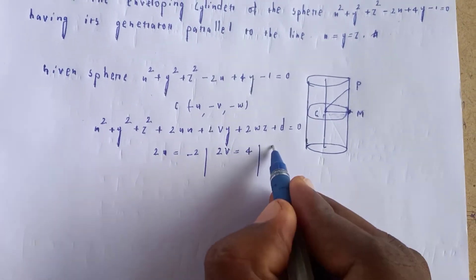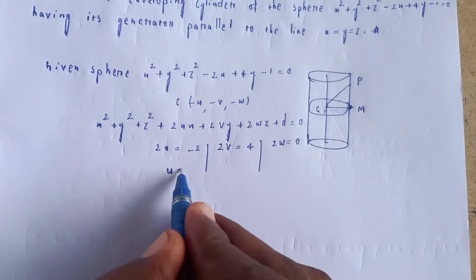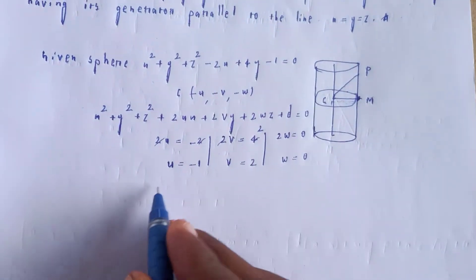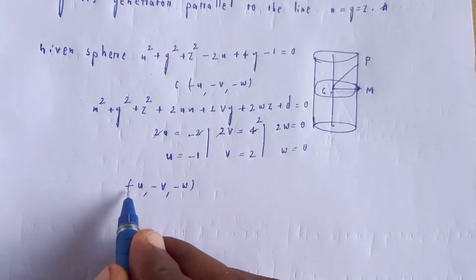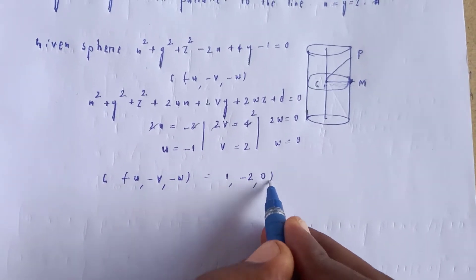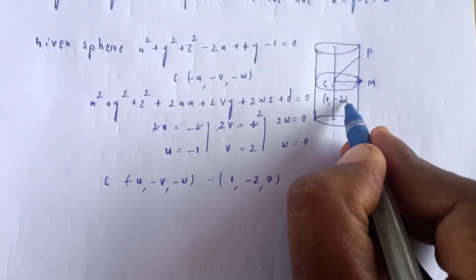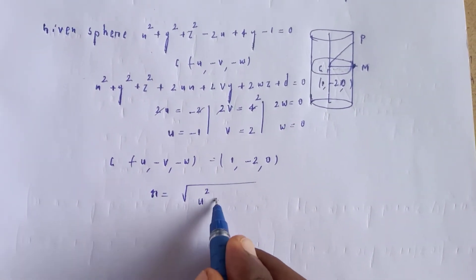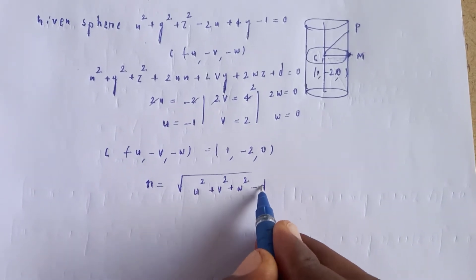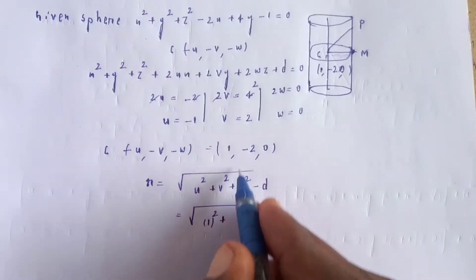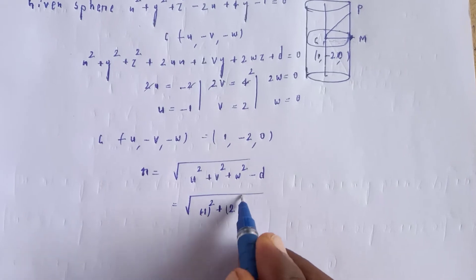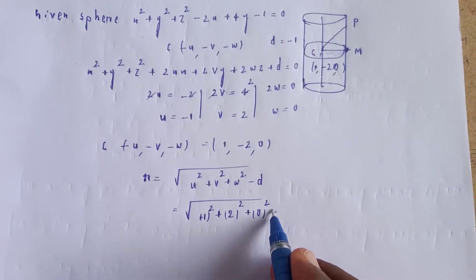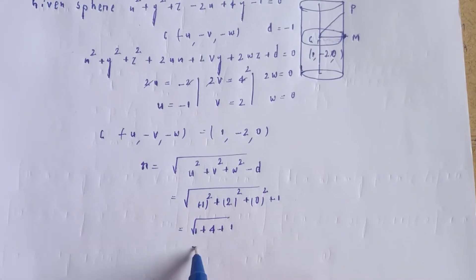Comparing coefficients: 2v gives 4, and 2w gives 0. So d equals minus 1. The center is minus u, minus v, minus w which gives us center at 1 comma minus 2 comma 0. The radius formula is root of u squared plus v squared plus w squared minus d, giving root of 1 plus 4 plus 0 minus minus 1, equal to root 6.